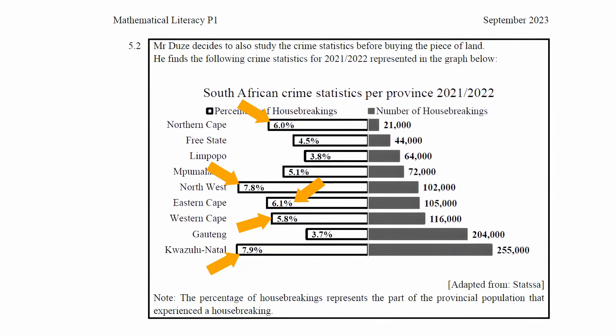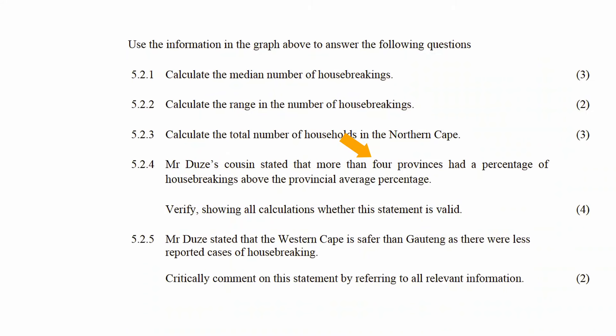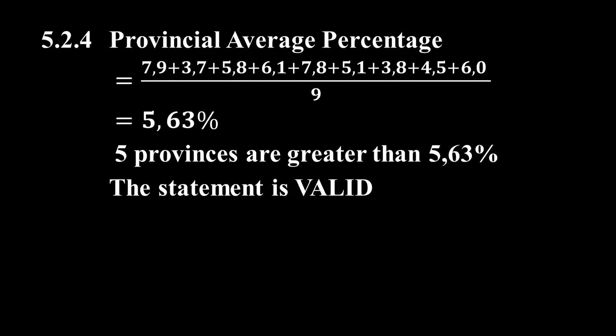There are five provinces in South Africa that had a percentage of house break-ins above the provincial average percentage of 5.6%. Mr. Doozie's Cousin stated that more than four provinces had a percentage above the provincial average, and since five is more than four, the statement is valid.